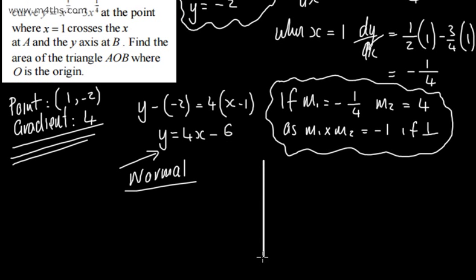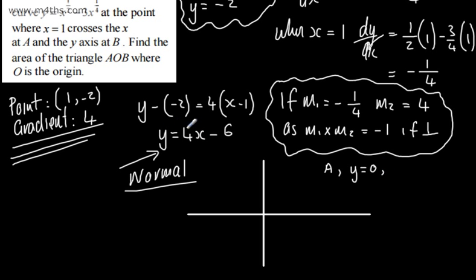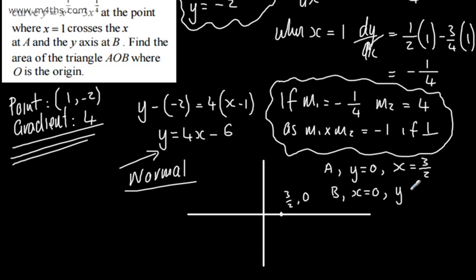I'm now going to draw a quick sketch of what we've got. Point A is where the normal crosses the x-axis, so y equals 0. Setting 0 equal to 4x minus 6 gives x equals 3/2. So A is the point (3/2, 0) and the relevant length is 3/2. For point B, x equals 0, so y equals 4(0) minus 6, which is negative 6. So B is the point (0, -6) and that length is 6.